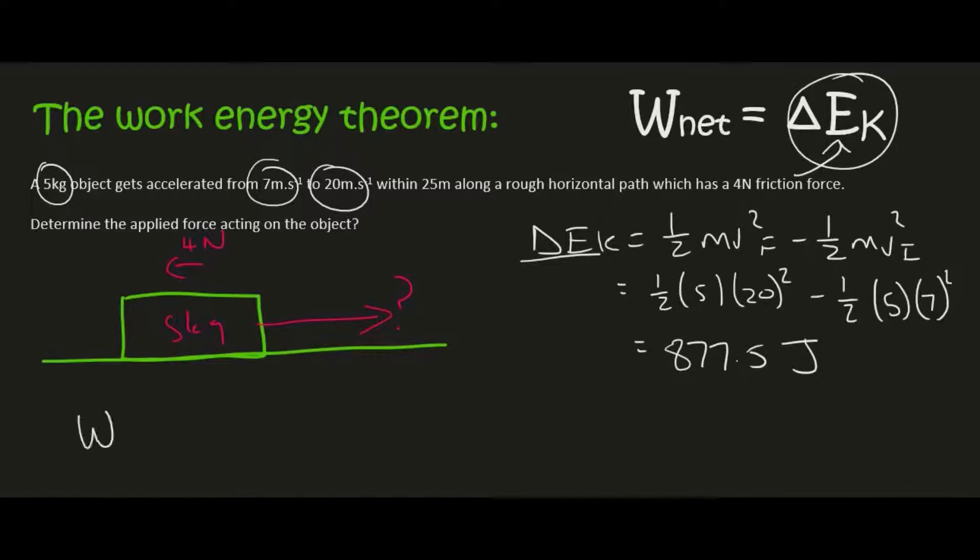Now we know that W_net is equal to F_net times by delta x times by cos theta. So there's so many different ways of doing this and so I always have to be careful that I'm not confusing anyone. But there are various ways you can do this.